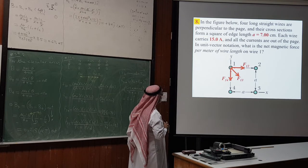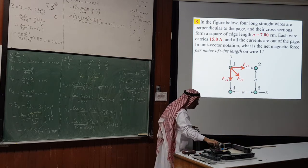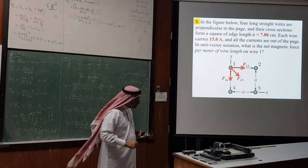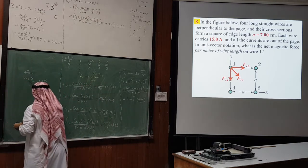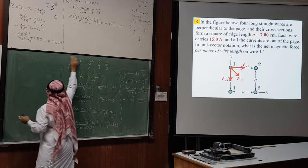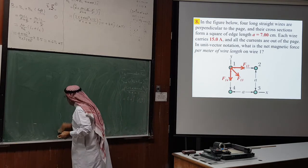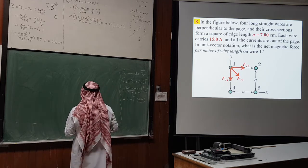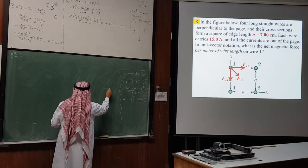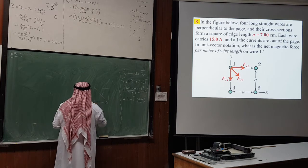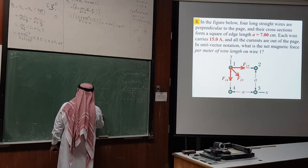The diagonal distance between wires one and three is r = a√2. The force per unit length from wire three requires resolving into x and y components. The x-component of f₁₃ is (μ₀I² / (2π × a√2)) × cos 45° = μ₀I² / (4πa), and similarly for the y-component since sin 45° = cos 45°.